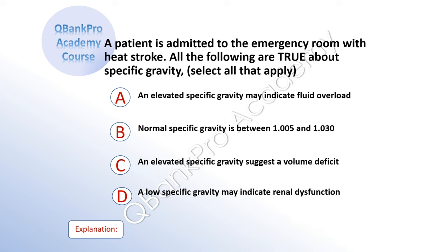A patient is admitted to the emergency room with heat stroke. All the following are true about specific gravity. Select all that apply. A: an elevated specific gravity may mean fluid overload. B: normal specific gravity is between 1.005 and 1.030. C: an elevated specific gravity suggests a volume deficit. D: a low specific gravity may indicate renal dysfunction.